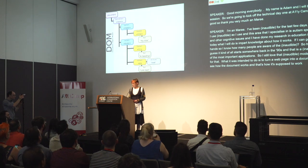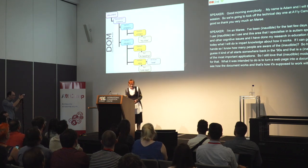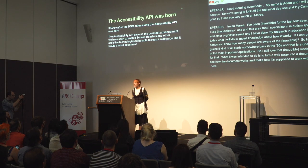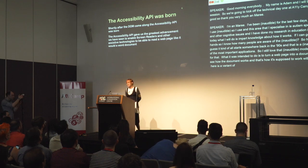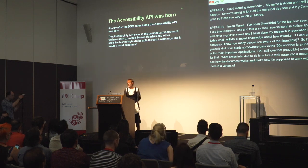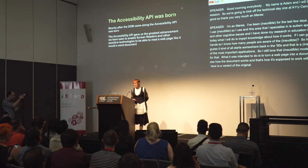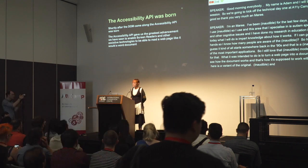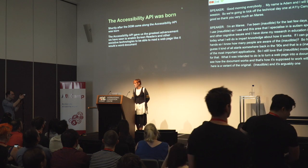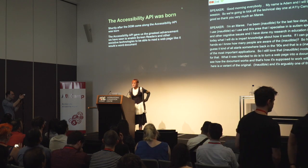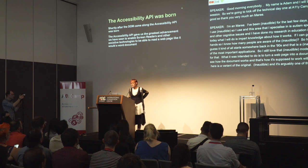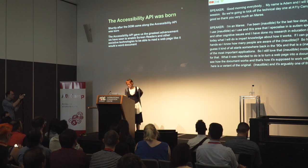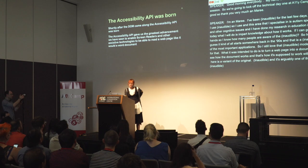Shortly after the DOM came along, the Accessibility API was born. It's arguably one of the most important advances we made on the web. With that came the achievement of not just screen readers, but all assistive technologies out there as well — sip and puff and various other things.